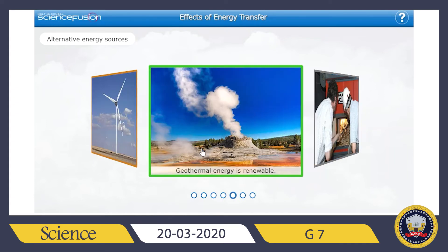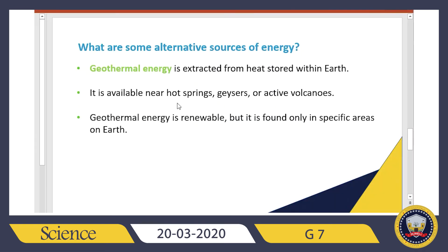Next is geothermal energy, which is also a renewable energy resource that can be used as an alternative energy source. Geothermal energy is basically the heat trapped inside the earth. It can be used as a heat resource or for producing electricity. It is clean and does not produce any greenhouse gases or waste materials. However, the problem is it can only be used in certain areas on earth — specifically near hot springs, geysers, or active volcanoes, where the earth's crust is active.